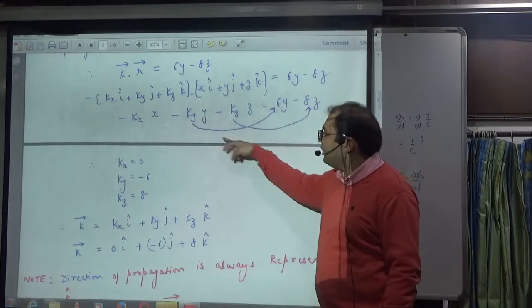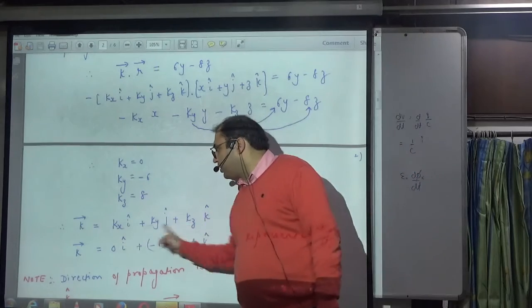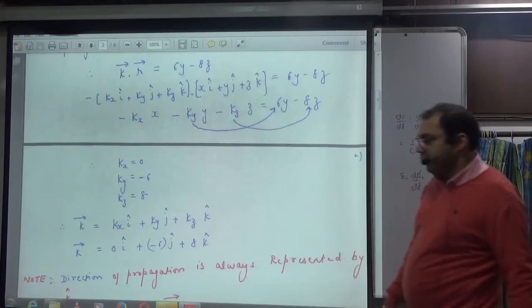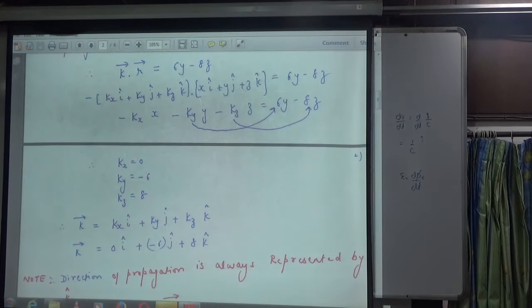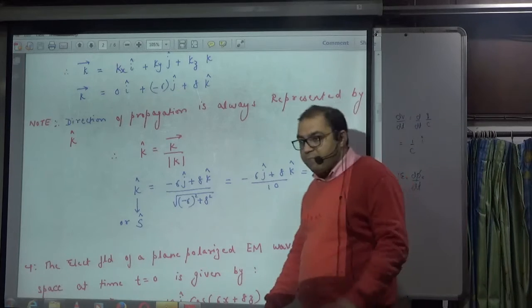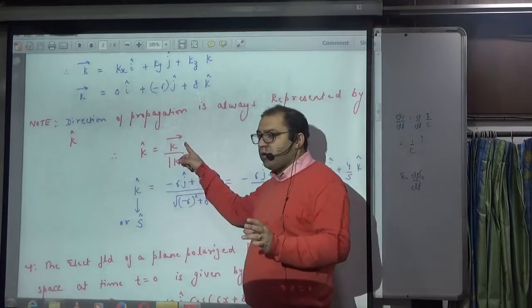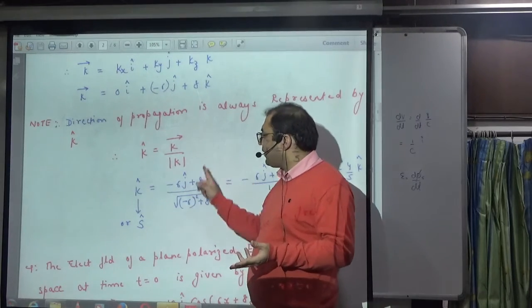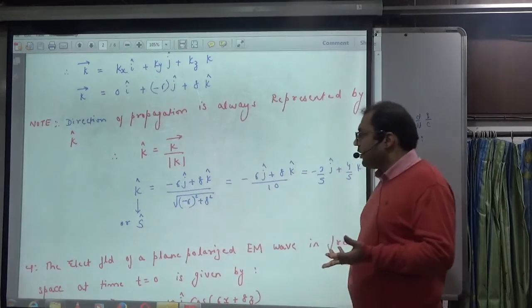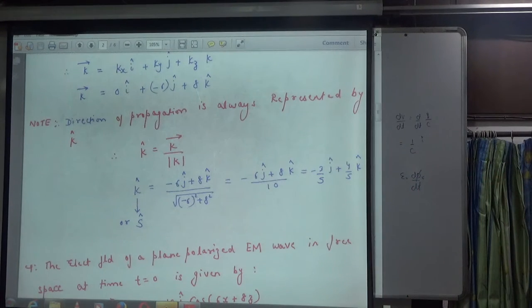Matching coefficients: x's coefficient with x's, y's with y's, z's with z's — so you get kx, ky, kz values. This gives you k-vector, which represents the direction of wave propagation. Direction of propagation is always represented by k-cap. The unit vector is k-vector divided by its magnitude, which is 10. So k-cap is the answer for direction of wave propagation.